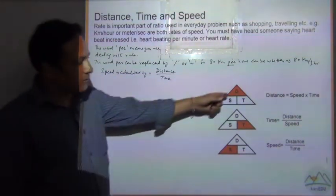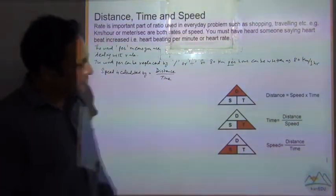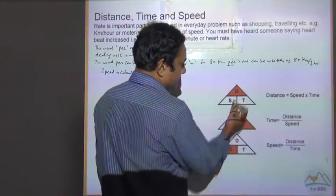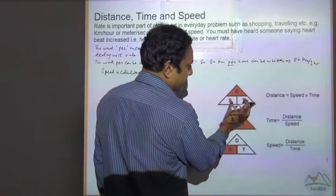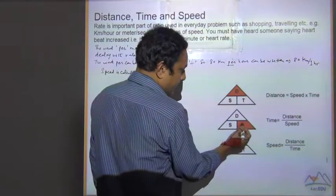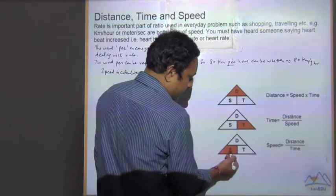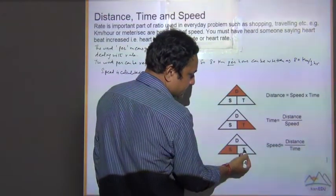And an easy way to remember is from this diagram. In this diagram, you make this DST. So distance is equal to speed multiplied by time. Speed into time. And if you want to calculate T, it is distance divided by speed. And if you want to calculate speed, this is distance divided by time.